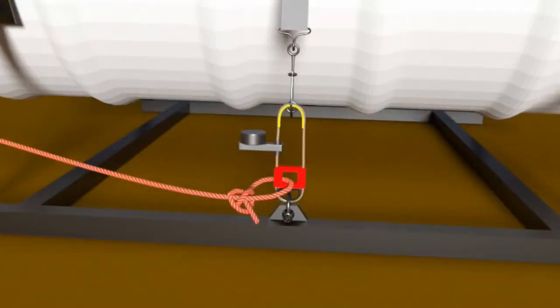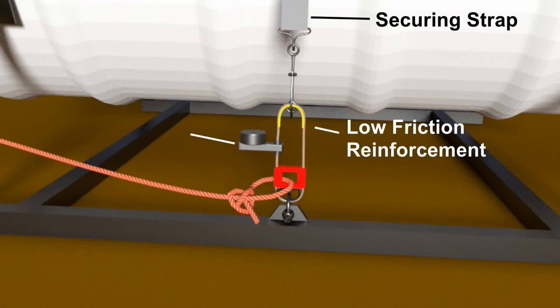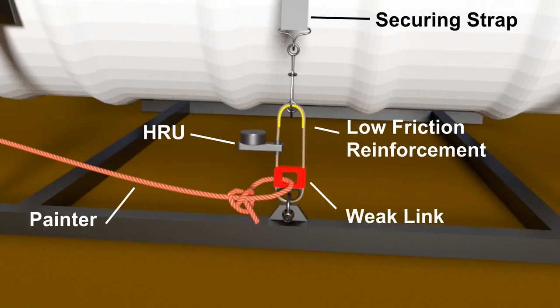Overall, we've got the main securing strap attached to the low friction reinforcement, the hydrostatic release unit which cuts the raft free, the weak link to which the painter is attached, and then finally the whole unit is secured to the deck through its securing point. So what happens when we sink?